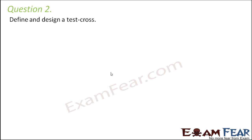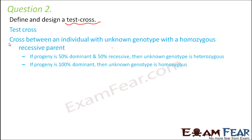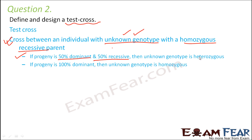Let us look at question number 2: define and design a test cross. The test cross is a cross between an individual with an unknown genotype and a homozygous recessive parent. The output of this cross can tell you whether the unknown genotype was heterozygous or homozygous. If the progeny is 50% dominant and 50% recessive, that means the unknown genotype is heterozygous — because the heterozygous individual has both one dominant and one recessive allele, and the recessive trait that was hidden gets expressed in a 50-50 ratio. But if the progeny is 100% dominant, that means the unknown genotype is homozygous.